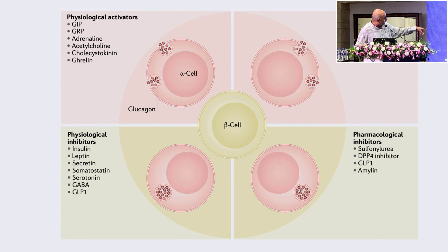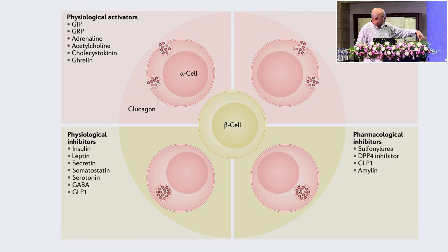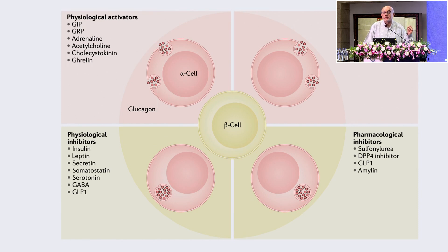Physiological inhibitors of glucagon are insulin, leptin, secretin, somatostatin, GABA, and GLP-1. Pharmacological inhibitors are sulfonylureas, DPP-4 inhibitors, and glucagon-like peptide-1. That's why the predominant action of GLP-1-RA is at glucagon.